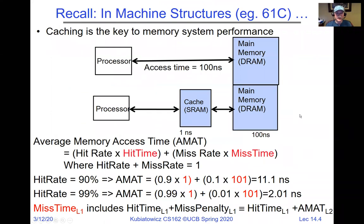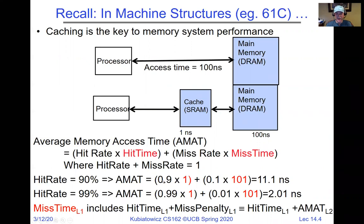We also started talking about caching. One thing I was reminding you about from 61C is average memory access time. If a processor talks to slow main memory at 100 nanoseconds versus going through a cache, assuming any locality, you get a much improved average memory access time. Average memory access time is hit rate times hit time plus miss rate times miss time. With a 90% hit rate it comes out to 11.1 nanoseconds, and with a 99% hit rate we get down to about two nanoseconds.